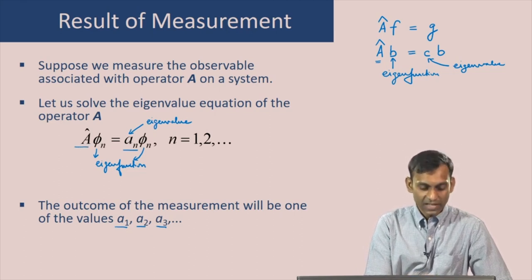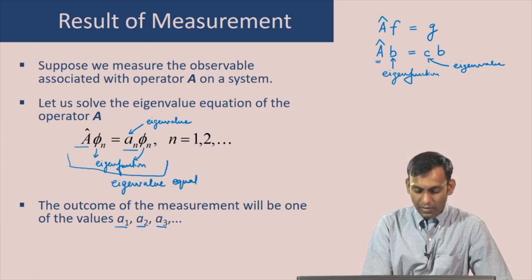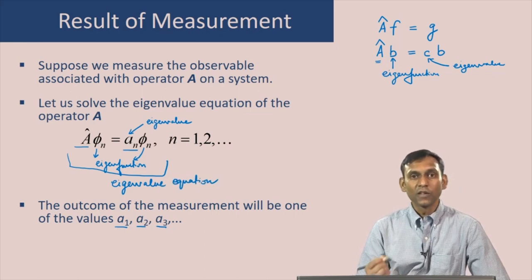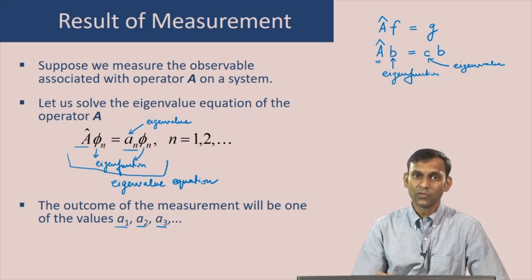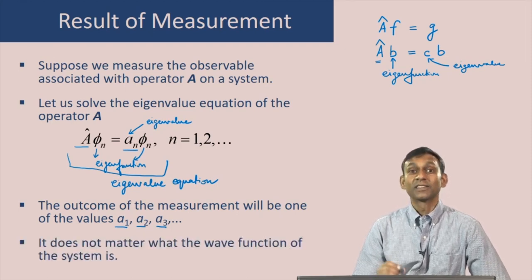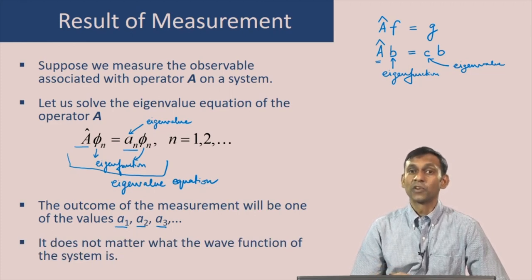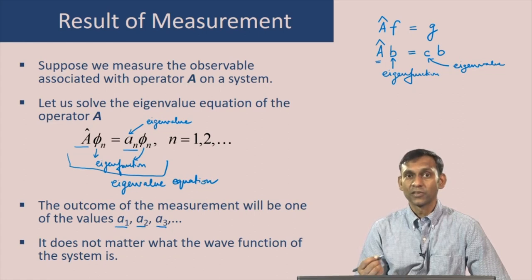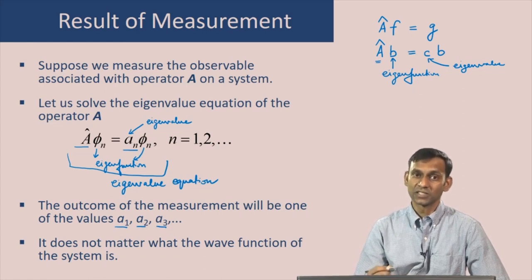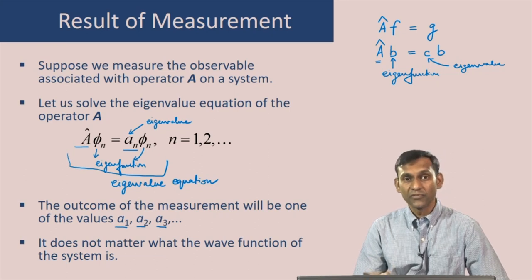The equation here is called the eigenvalue equation of A. You solve the eigenvalue equation of A and that tells you what possible values you can get when you measure the observable corresponding to A. Note that it does not matter what the wave function of the system is — it just depends on the operator. So if you are measuring the energy, the eigenvalues corresponding to energy are what you can measure.